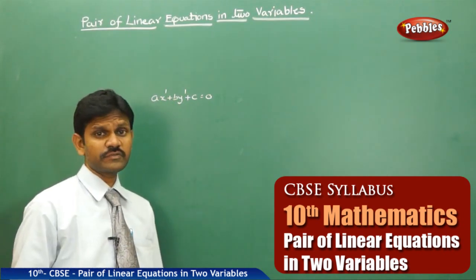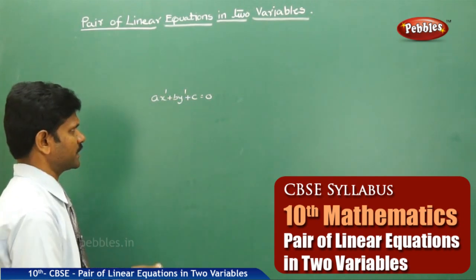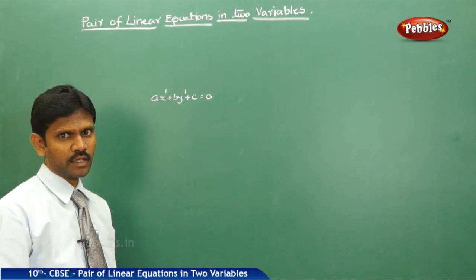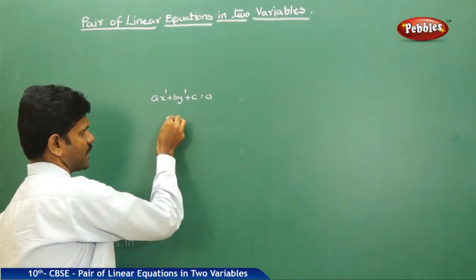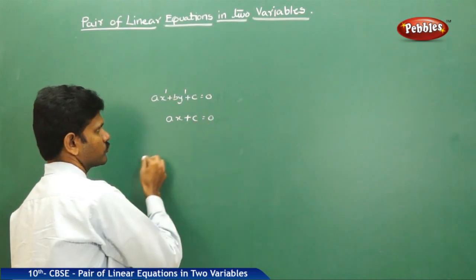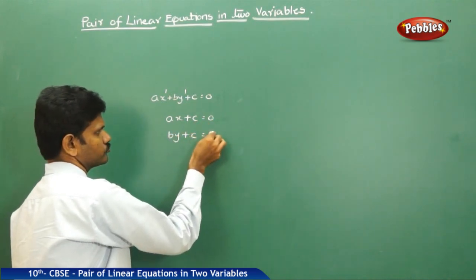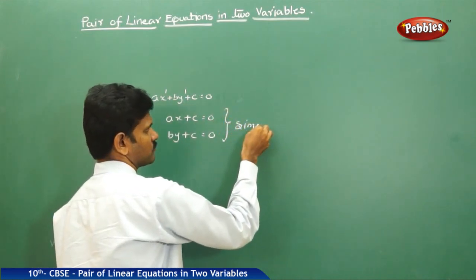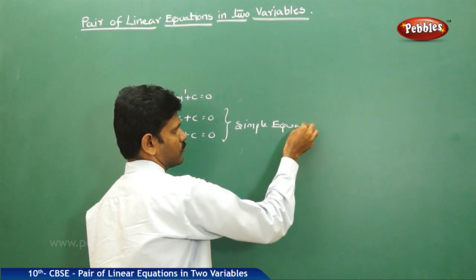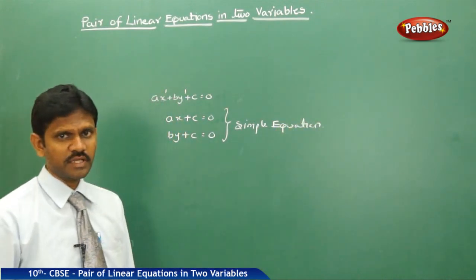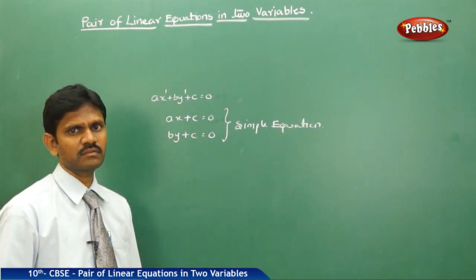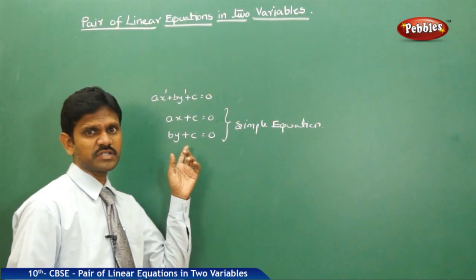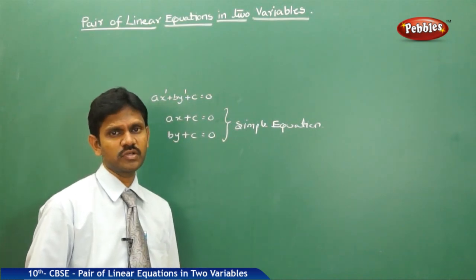Suppose a linear equation with one variable — what is it called? In the linear equation Ax plus By plus C equals 0, there are two variables. If we suppose only one variable, that is either Ax plus C equals 0 or By plus C equals 0, it is called a simple equation. A linear equation with one variable is called a simple equation, and a simple equation has only one solution — that is, a unique solution.